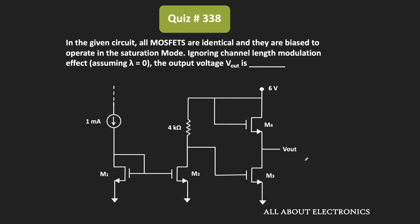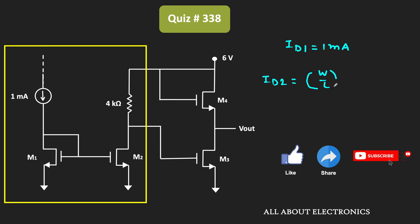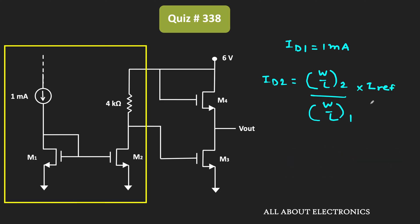We have been asked to find the output voltage. Looking at this circuit, this portion is the current mirror, so the reference current is equal to 1 mA and the same current is also flowing through transistor M1, meaning ID1 = 1 mA. Since the device characteristics of all MOSFETs are equal, the current through the second MOSFET ID2 will also be equal to 1 mA, because for the current mirror ID2 equals the (W/L) ratio of M2 divided by the (W/L) ratio of M1, times I-reference.